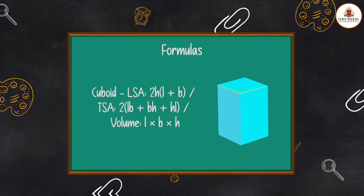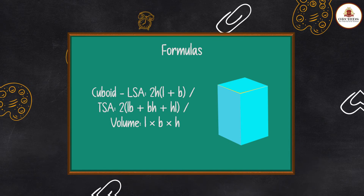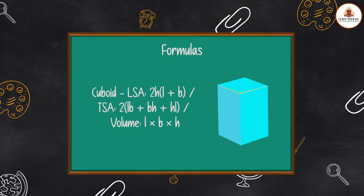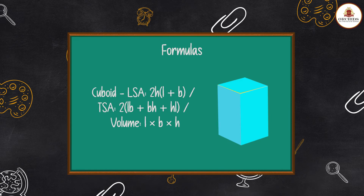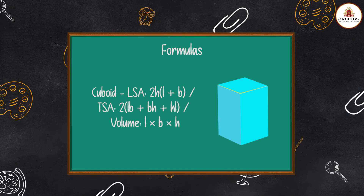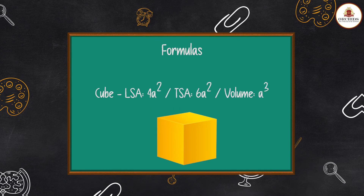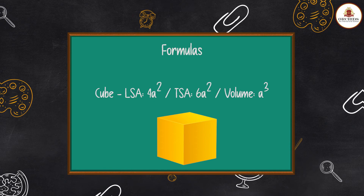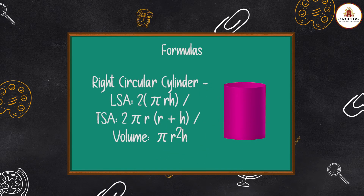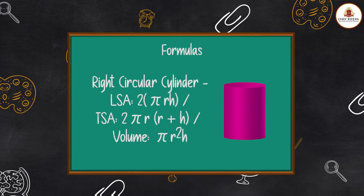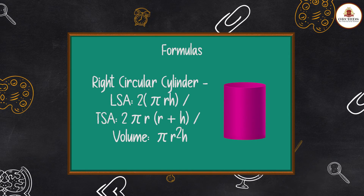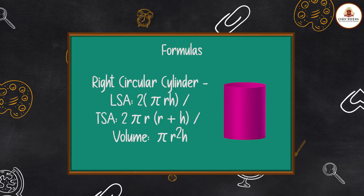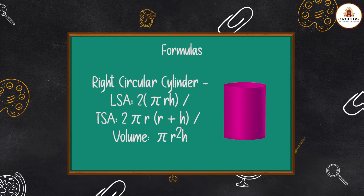Cuboid: LSA = 2H(L + B), TSA = 2(LB + BH + HL), Volume = L × B × H. Cube: LSA = 4a², TSA = 6a², Volume = a³. Right Circular Cylinder: LSA = 2πrh, TSA = 2πr(r + h).